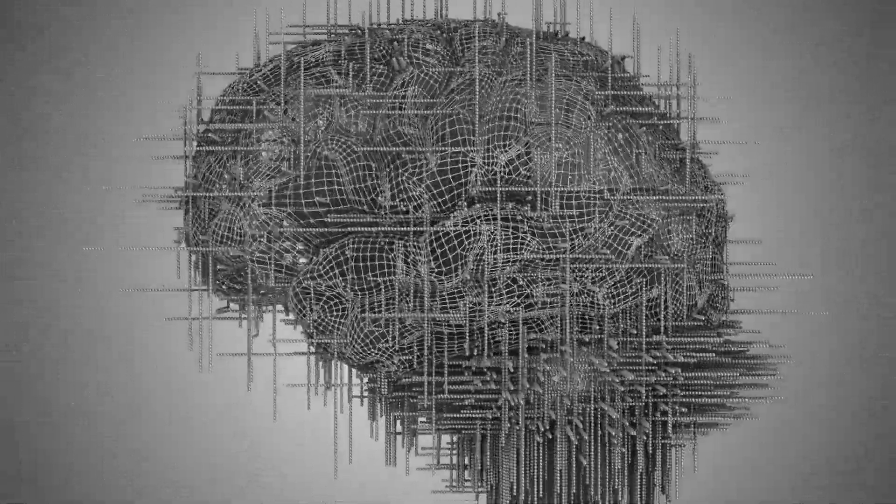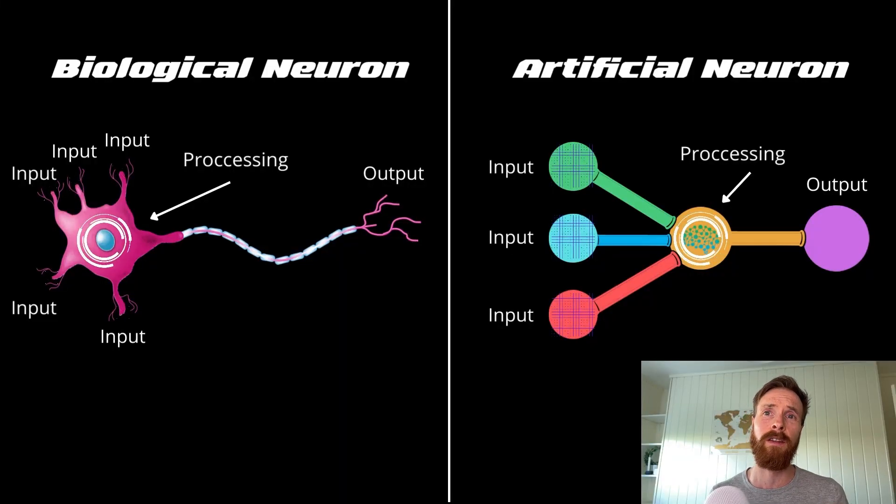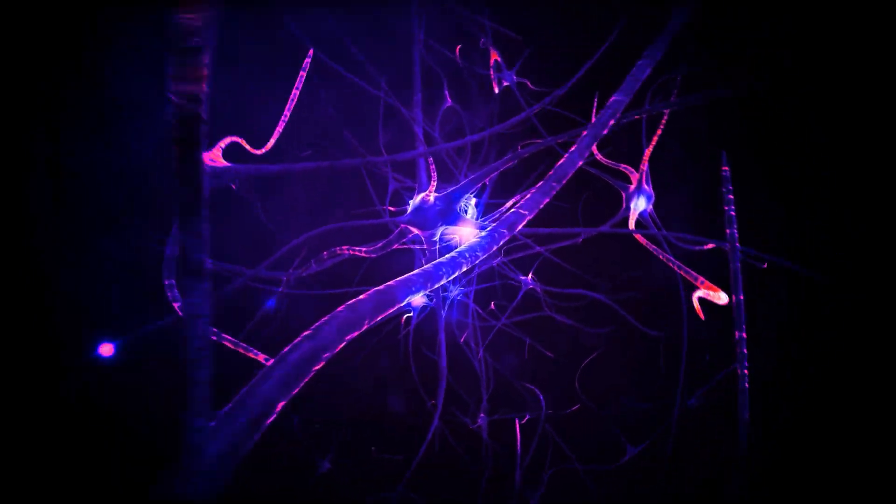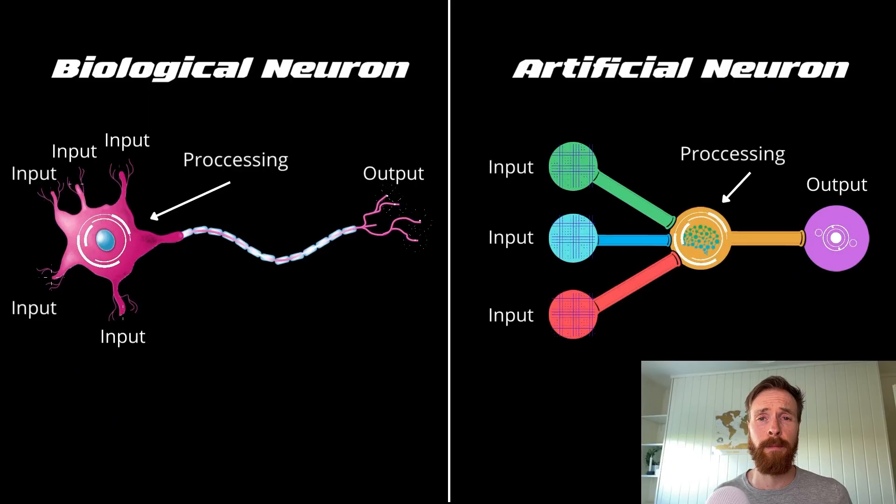The full potential of this idea is only unleashed when artificial neurons are connected together to make an artificial neural network. This is what allows computers to recognize images, drive cars, and make fantastic art like DALL-E 2 and Google Imagine.